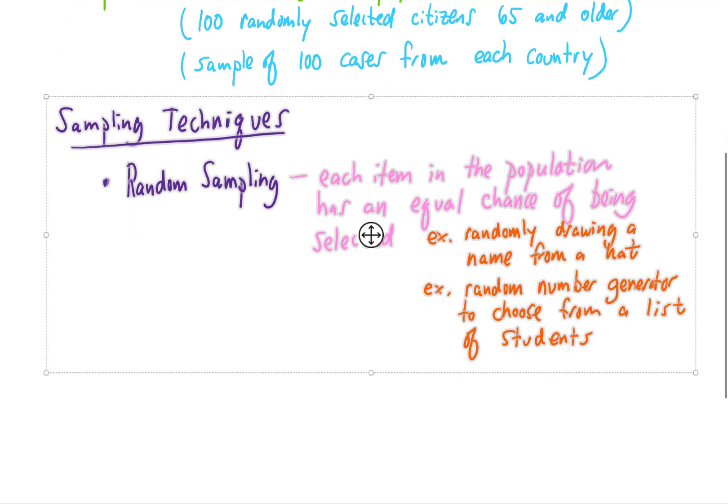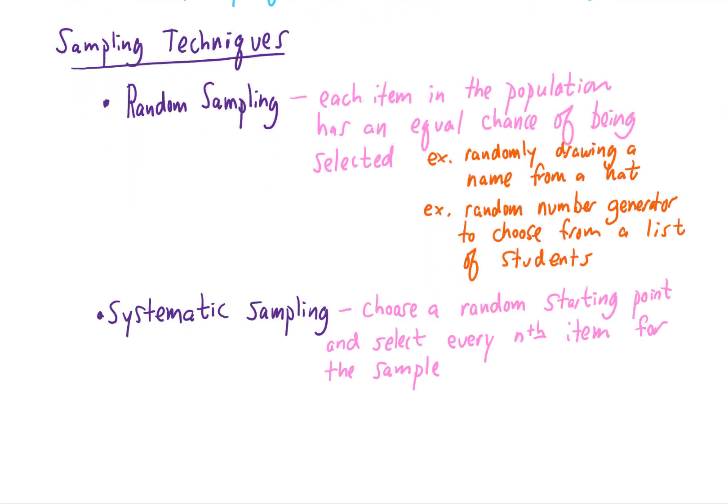Our next sampling technique is called systematic sampling. With systematic sampling, what we do is we choose a random starting point and then we select every nth item for our sample. For example, if you wanted to survey grocery store customers, maybe you would survey every 50th customer that walks into the door.